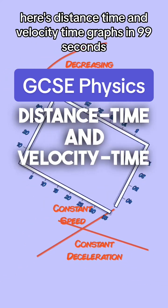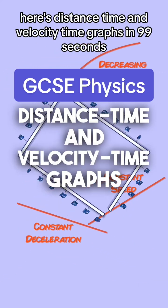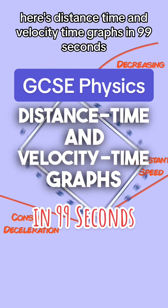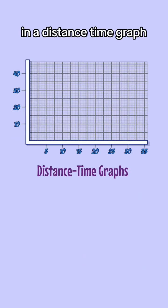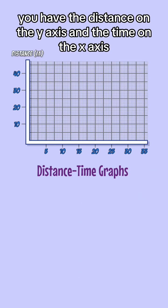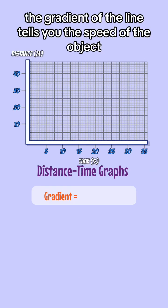Here's distance time and velocity time graphs in 99 seconds. In a distance time graph, you have the distance on the y-axis and the time on the x-axis.